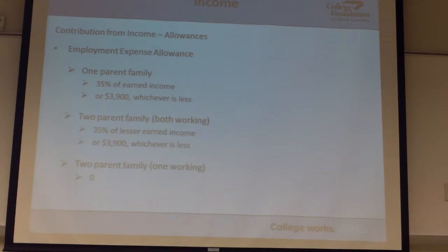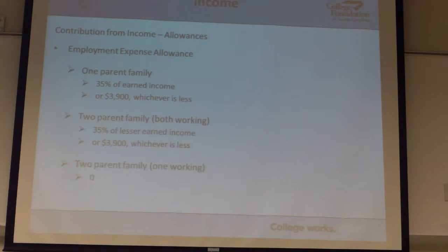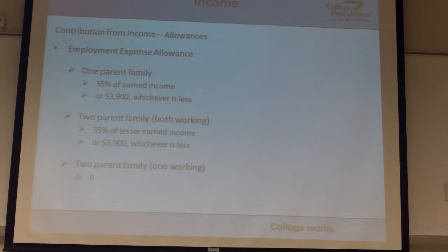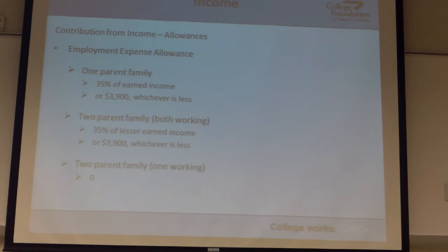We also know that everybody has expenses related to their job — they drive to and from there, and they probably had to buy clothes that are nicer than they would normally wear in order to go to that job. So we protect a portion of people's income if they are employed. It's different depending on the kind of family you are. A two-parent family where both are working, there's an amount. If you've got a two-parent family and one of them is not working — unemployed or working at home as a homemaker — there's no employment allowance because there's one person potentially working in the government's mind.